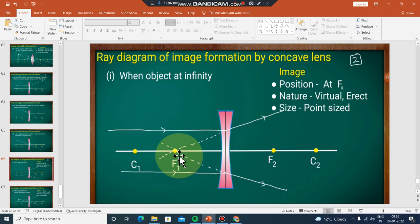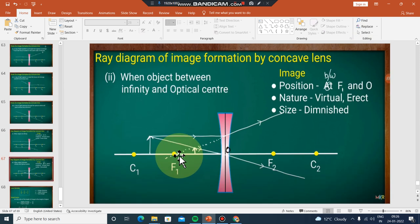When object is between infinity and optical center, the rays diverge and the image forms on the same side between the optical center and focus.